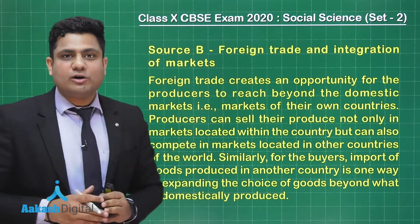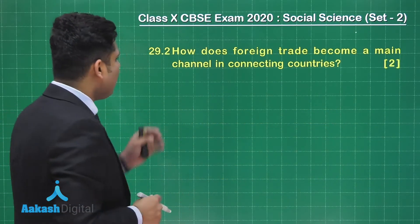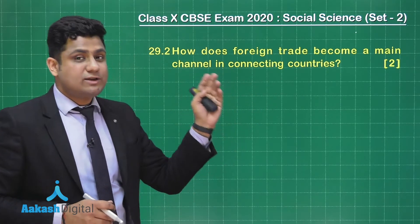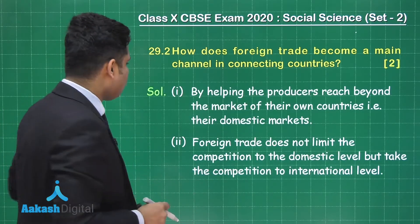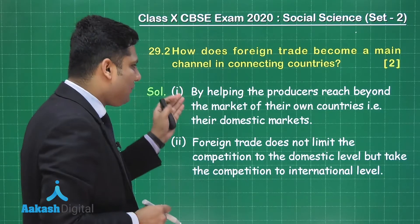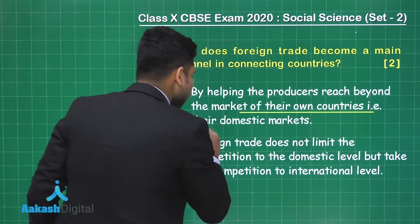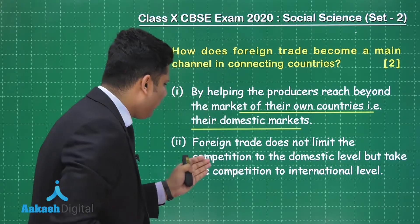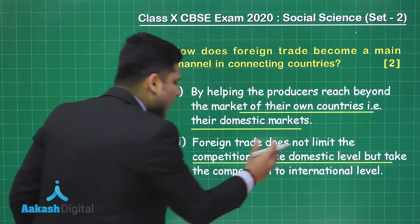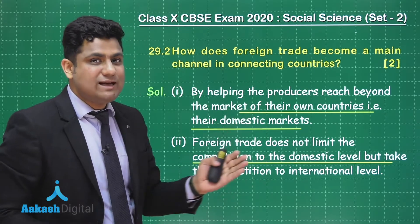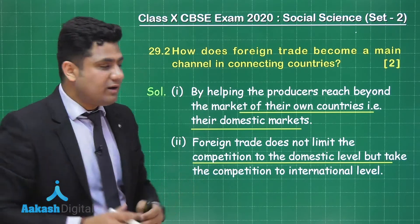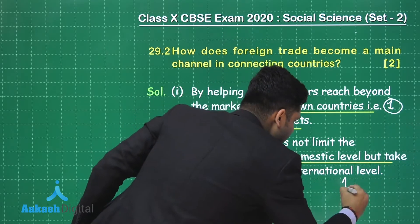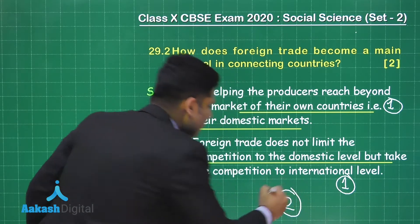The question based on source B is: how does foreign trade become a main channel in connecting countries? This question is of two marks, so you need to write two points. The answer is: first, by helping the producers reach beyond the market of their own countries, that is their domestic market, foreign trade helps in connecting the countries. Second, it does not limit competition to only the domestic market but takes the competition to higher levels, that is the international market. You'll get one mark for each point, totaling two marks.